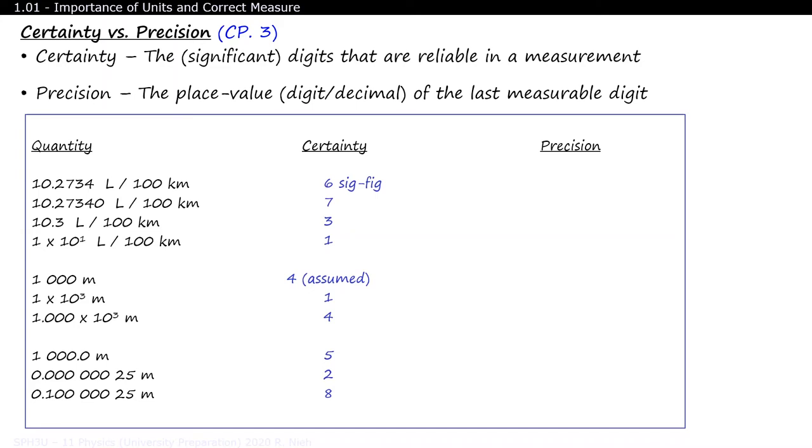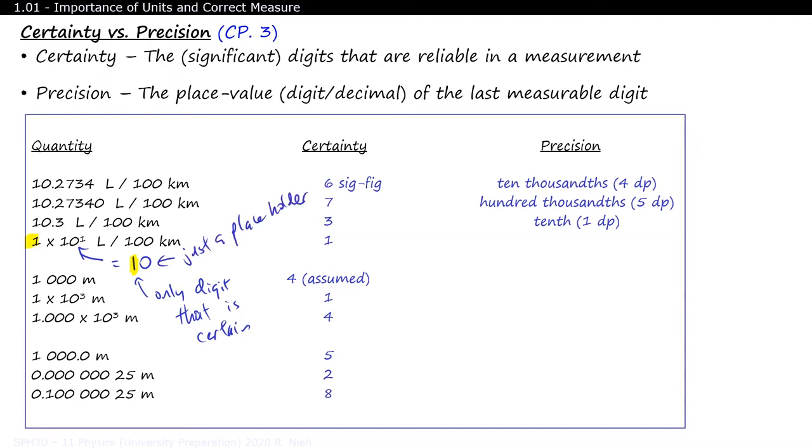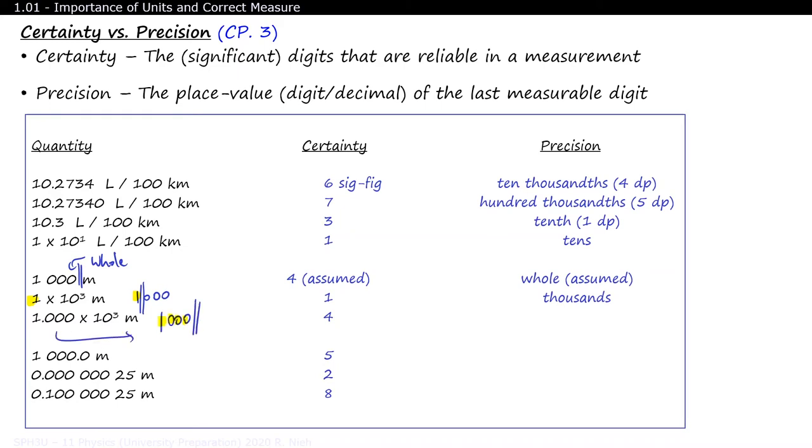Precision, on the other hand, is the place value of the least significant digit. The first example has a precision of 4 decimal places. The second example is even more precise and is rounded to 5 decimal places. The third example is rounded to the nearest tenth. For the fourth example, you'll have to expand this one out. Since 1 is the only digit shown in the coefficient, this is the representation of approximately 10, so it's rounded to the nearest tens. If every digit counts, 1,000 meters is rounded to the nearest whole. In scientific notation, this represents roughly 1,000 meters, so it's rounded to the nearest thousand. Again, if you want to tell the reader that you need exactly 1,000 meter sticks, it's best to write this out in scientific notation. 1,000.0 is rounded to the nearest tenth, and the last two examples are rounded to 8 decimal places, or to the nearest hundred millionths.